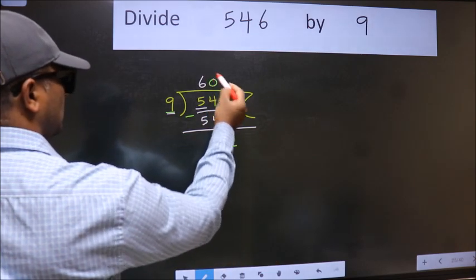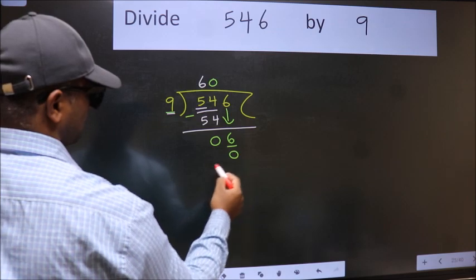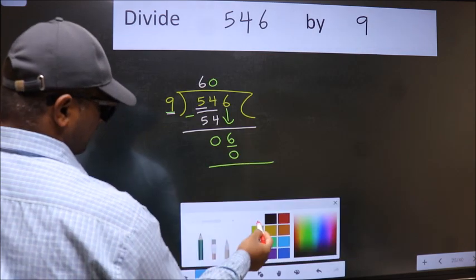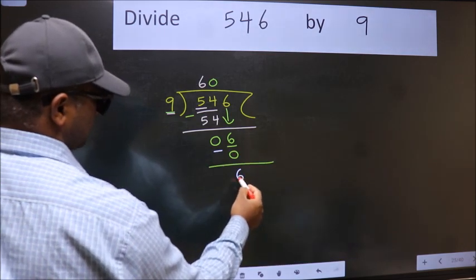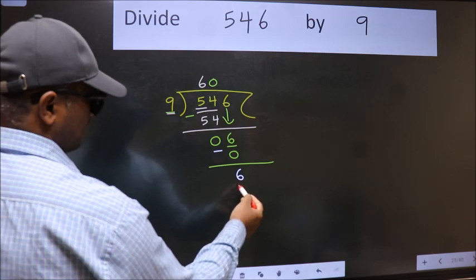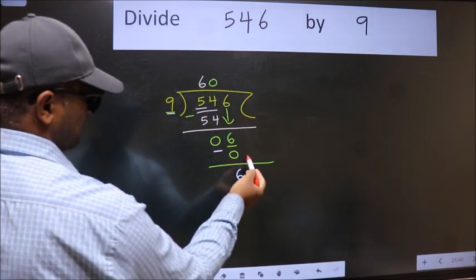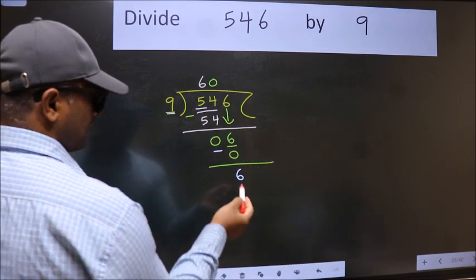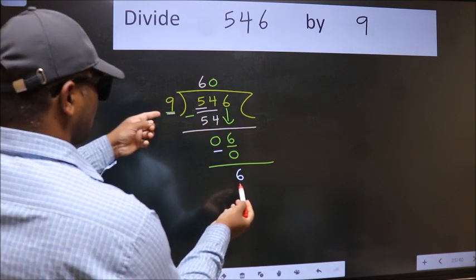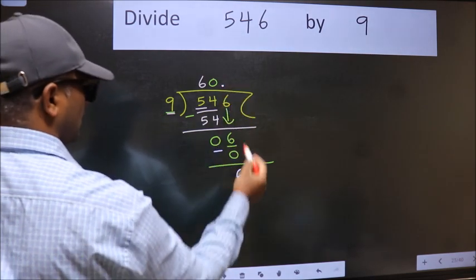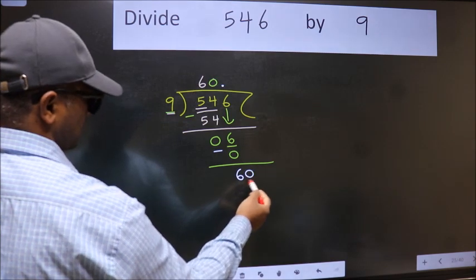we take 0. So 9×0=0. Now we subtract, we get 6. Over here we did not bring any number down and 6 is smaller than 9, so now we can put dot and take 0, so 60.